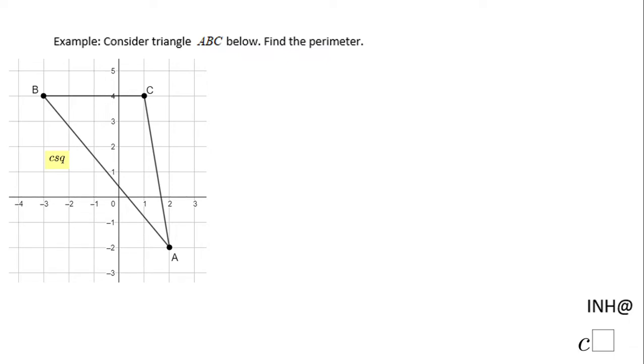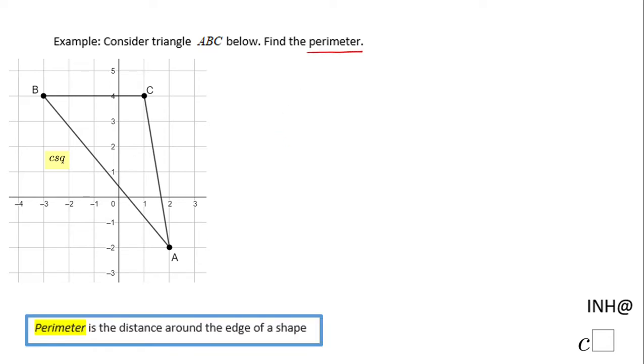Welcome back to iNeedHelpAtCsquare. In this example we have triangle ABC and we need to find the perimeter of this triangle. The perimeter of any shape is the distance around the edge.